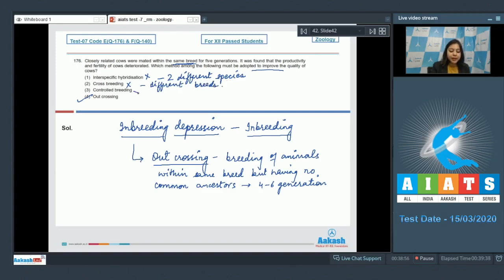Number three, controlled breeding is also incorrect as controlled breeding is artificially carried out by using techniques like MOET and artificial insemination. So the correct answer for overcoming inbreeding depression is option number four, that is outcrossing.